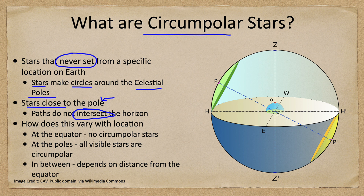We have the zenith straight up overhead, the horizon points to the east and west, and we have the poles. The north celestial pole is marked off to the left, and the south pole is marked with P-prime. These poles are always tilted and inclined based on your position on Earth.